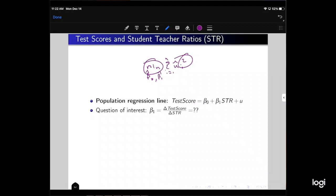Okay, so for our example, test scores and student-teacher ratios. We have a population regression line, which is test score equals beta 0 plus beta 1 times student-teacher ratios plus some error term u. The question of interest is, what is beta 1? What is the slope or the relationship between student-teacher ratios and test scores? As we increase or decrease student-teacher ratios, beta 1 is going to tell us how test scores change. Beta 1 is equal to the derivative of test scores with respect to student-teacher ratios. How do test scores change with respect to a change in student-teacher ratios?